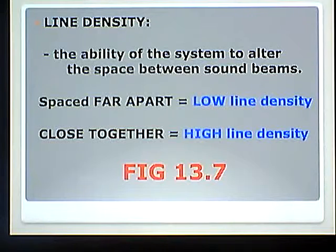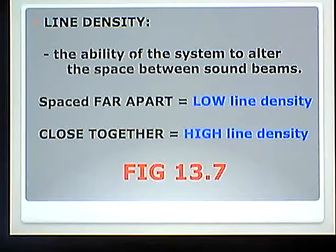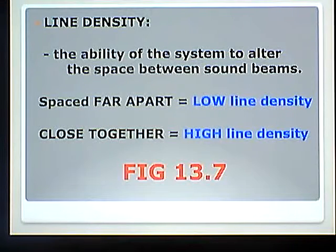Line density is the ability of the system to alter the space between sound beams — adding pulses. If they're spaced farther apart, it's a low line density. If they're close together, it's a high line density. Look at figure 13-7 and make sure you have that image in your head so you understand the terminology.